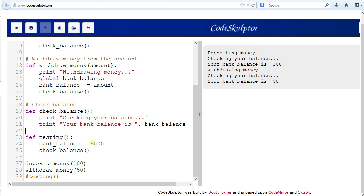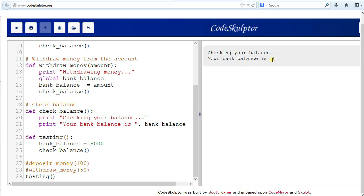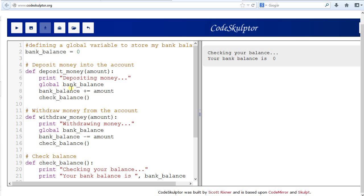So I have one last function here called testing. And in here, I am referencing this bank_balance variable, and I'm giving it the value of 5,000. And then I'm running the check_balance function. Let's see what happens. I'm going to comment my initial calls and just run testing. It tells me that my bank balance is 0. Why is that? I thought we initialized it with the value of 5,000. That is because to this function, bank_balance, we are simply defining a local variable here.